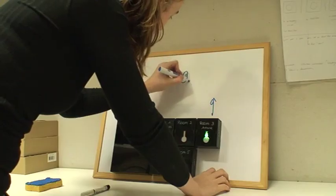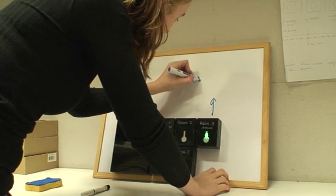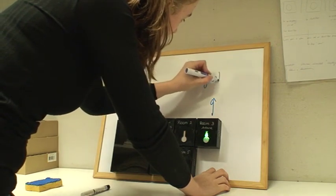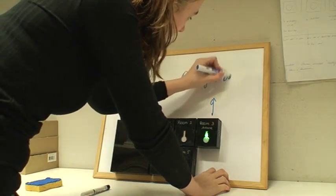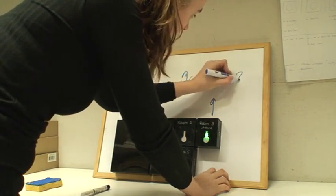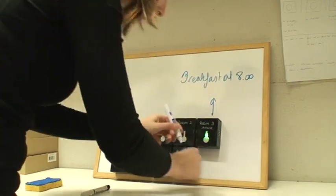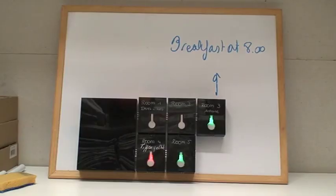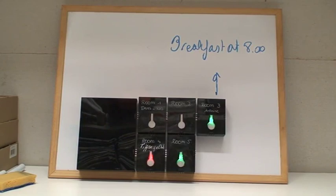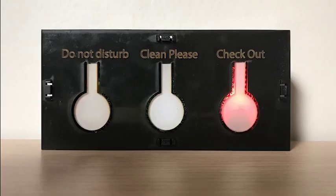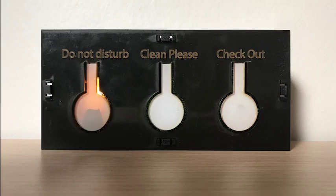The blocks are connected with magnets and are simply attached on a whiteboard, which allows the user to write down extra information. A colour code informs the user what the client wants. Red stands for checkout, green for clean please, and yellow for do not disturb.